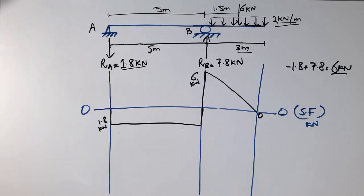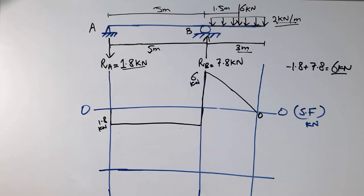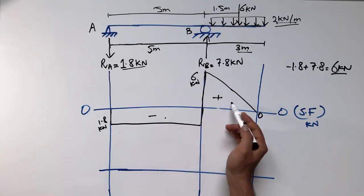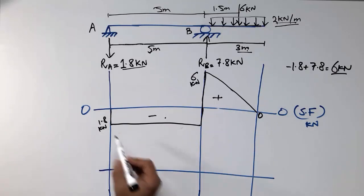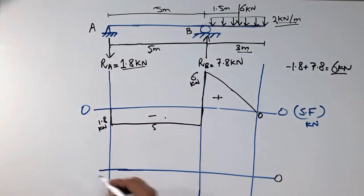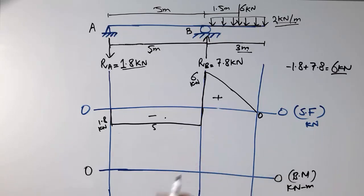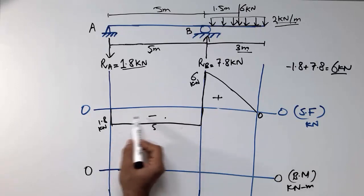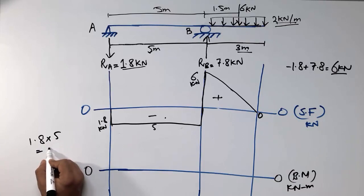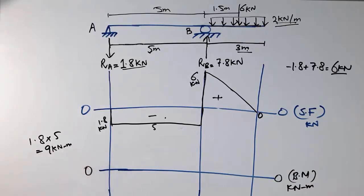To draw the bending moment diagram, I use the areas of the shear force diagram. The reference line for the bending moment is drawn. The shear force over the 5 m span is a rectangle of height 1.8 kN and length 5 m, giving an area of 1.8 × 5 = 9 kN·m. Since the shear force is negative in this region, the bending moment is also negative: −9 kN·m.